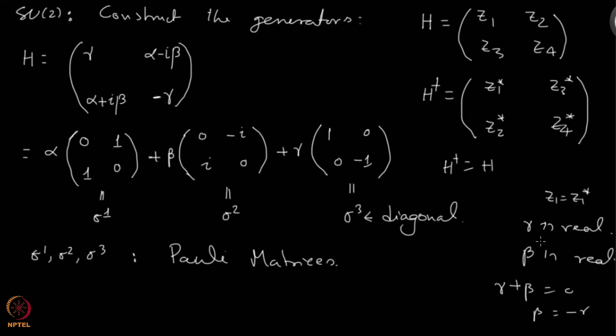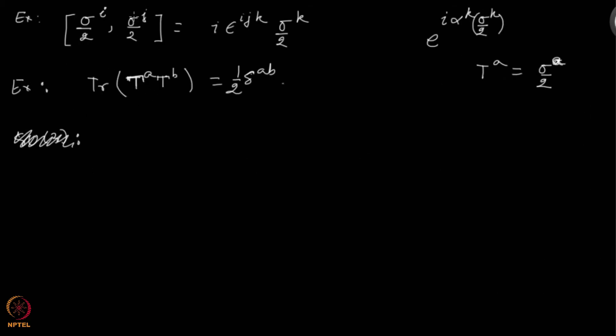In the last lecture we talked about the SU(2) group and discussed in some detail that group. For example, we wrote down the generators of SU(2) which are half times the Pauli matrices, and these Pauli matrices we found when we were looking at this quantity here.